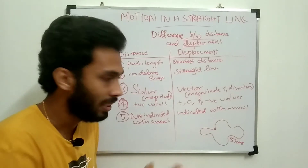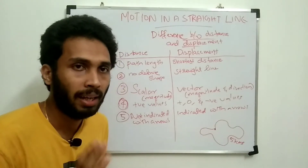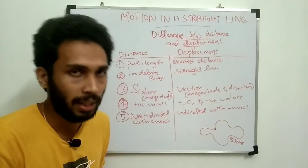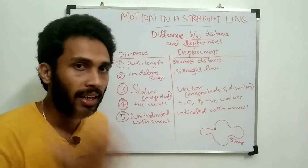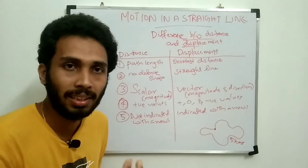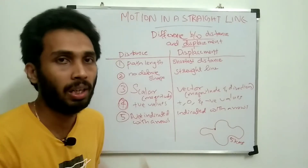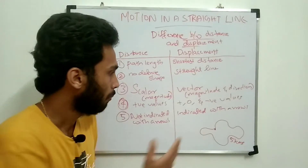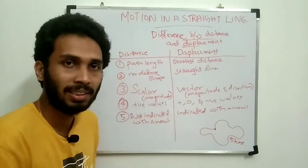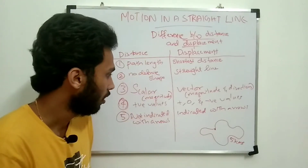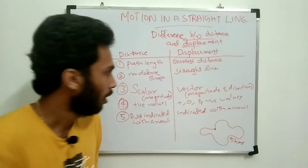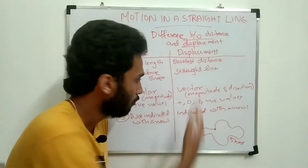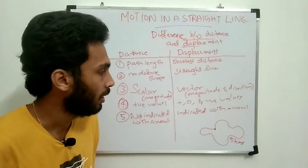If we represent distance, it is a scalar quantity. But displacement is a vector quantity — that is the key difference.